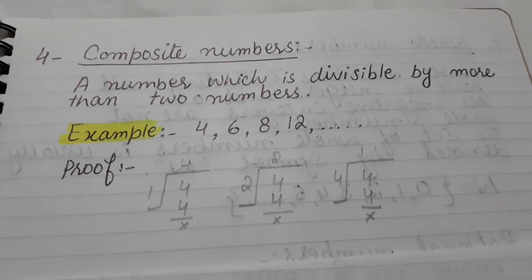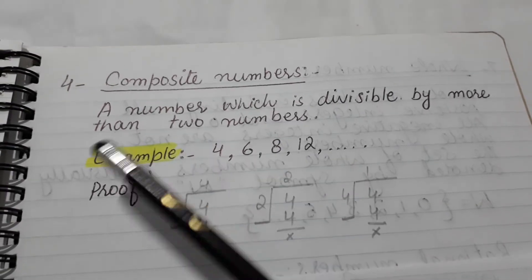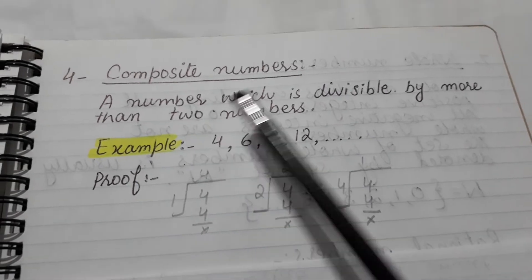Hi everyone, today we are going to discuss composite numbers. What are composite numbers? A number which is divisible by more than two numbers.